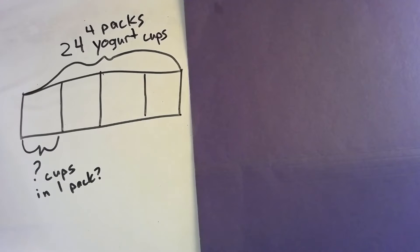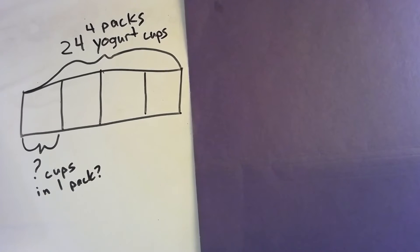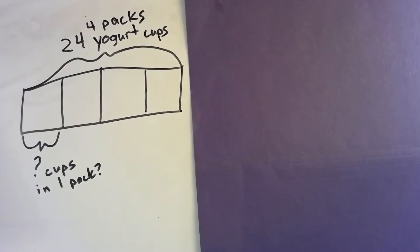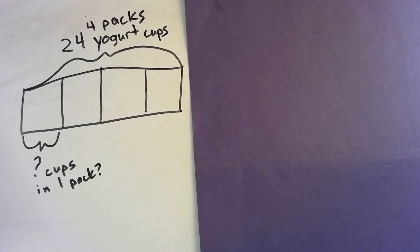Hi friends, we are doing lesson 17 in the multiplication and division friendly numbers. Here's the story problem: Mrs. Peacock bought four packs of yogurt. She had exactly enough to give each of her 24 students one yogurt cup.